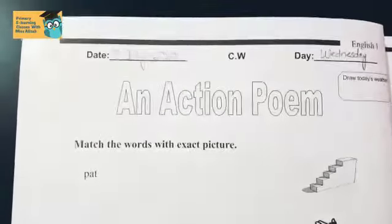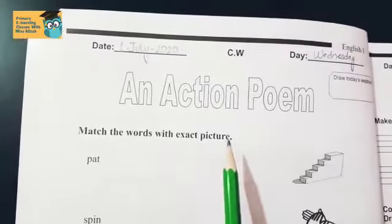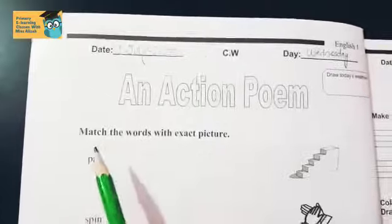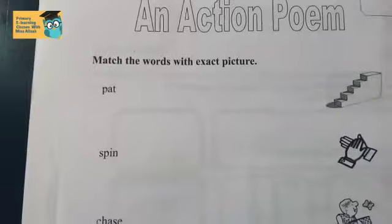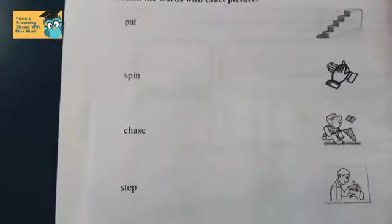Okay, now read the question. Match the words with exact picture. What do you have to do? You have to match these words with the exact picture. Here you have some words, and here you have some pictures. Now you have to read the words and match those words with the pictures.